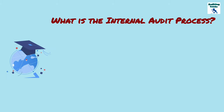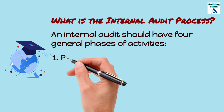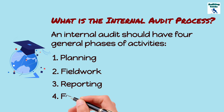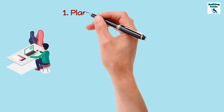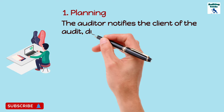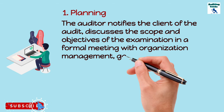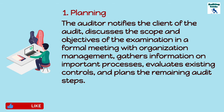Now let's see what the internal audit process and procedures are. An internal audit has four general phases: planning, fieldwork, reporting, and follow-up. During the planning phase, the auditor notifies the client of the audit, discusses the scope and objectives of the examination in a formal meeting with organization management, gathers information on important processes, evaluates the existing controls, and plans the remaining audit steps.